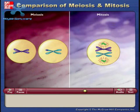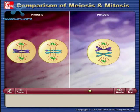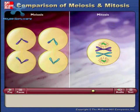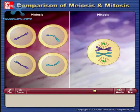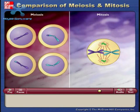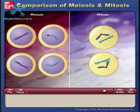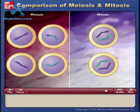In meiosis, a second division sequence occurs, resulting in four cells with half the number of chromosomes. Mitosis involves a single division sequence, resulting in two cells with no net change in the number of chromosomes.